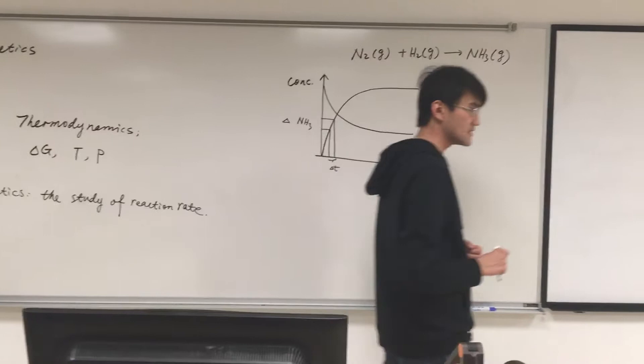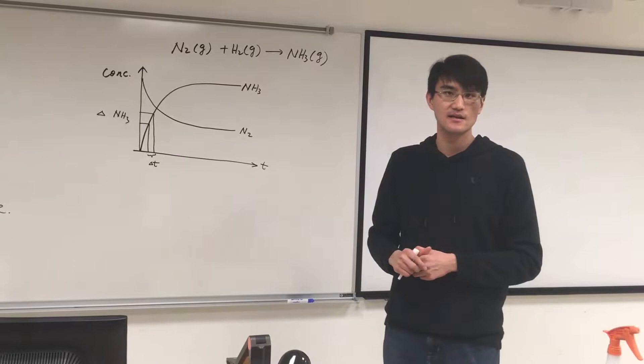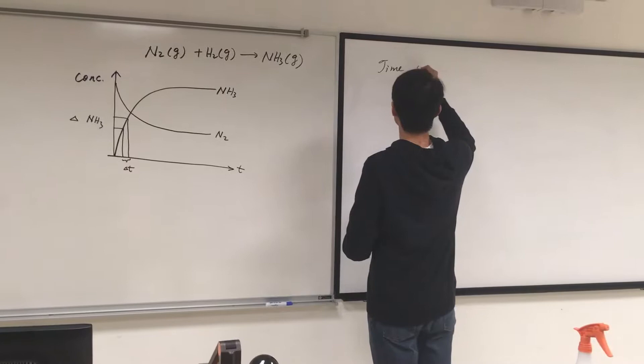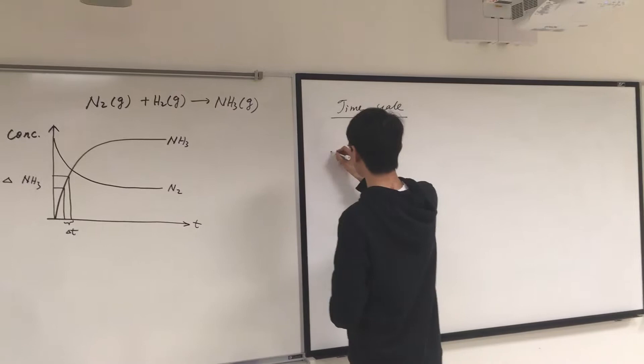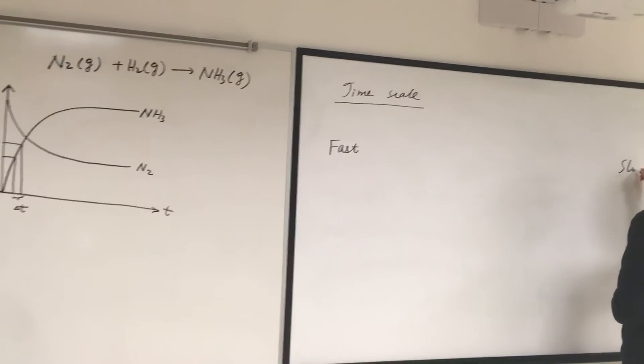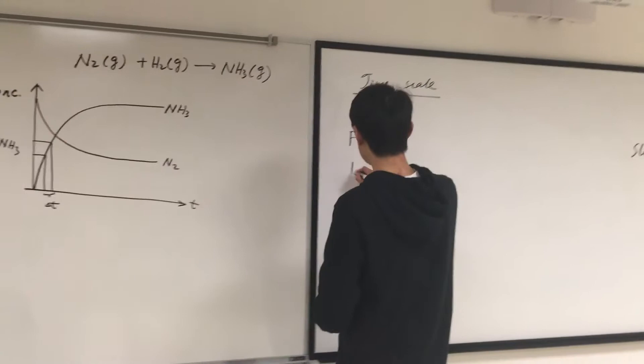Now, reaction rate varies greatly from reaction to reaction. Let me give you some examples considering these timescales of different reactions. Timescale, roughly speaking, means that how long does it take a chemical reaction to reach an equilibrium. On one hand, you have very fast chemical reactions, and on the other hand of the spectrum, you have very slow chemical reactions.